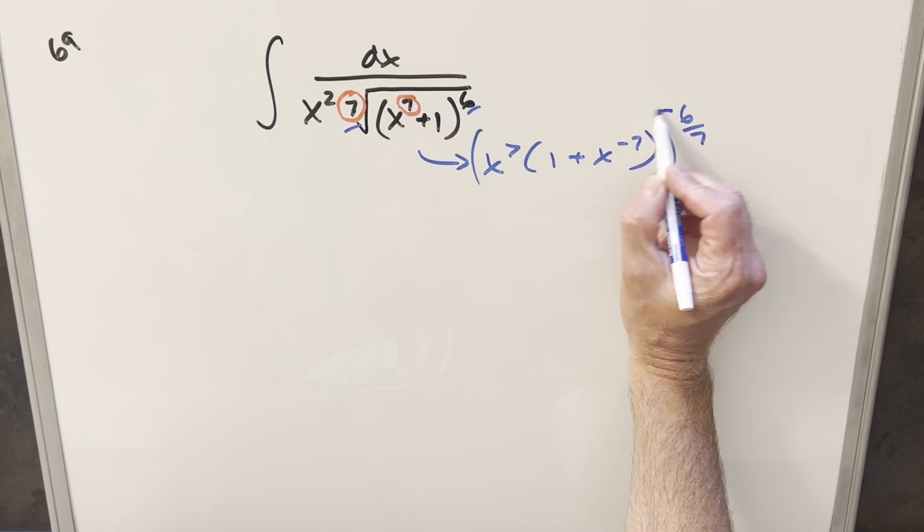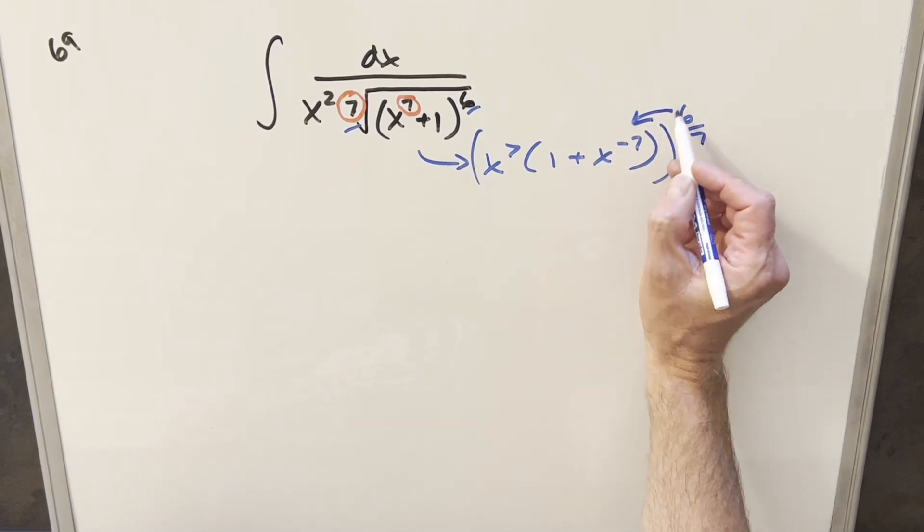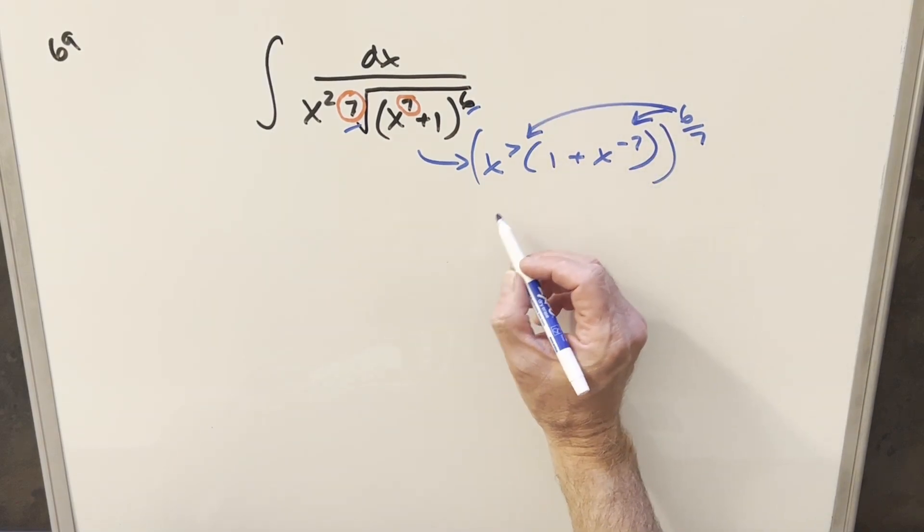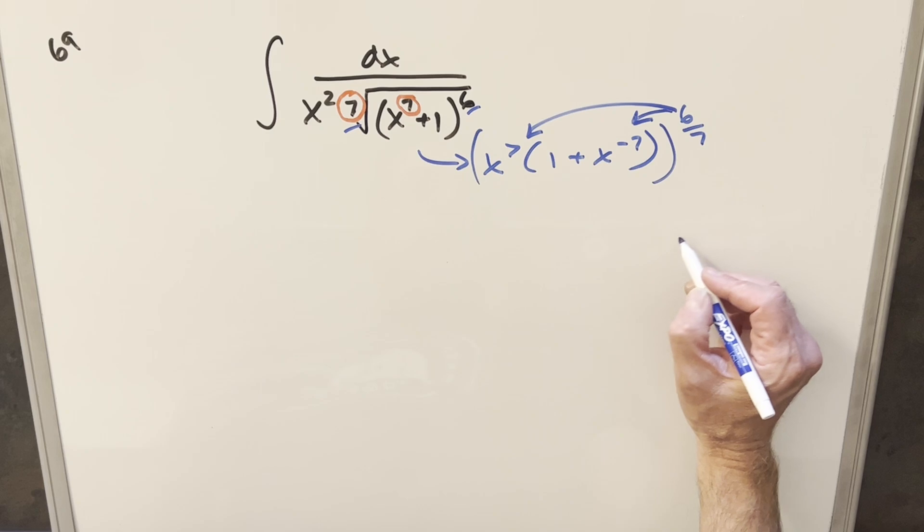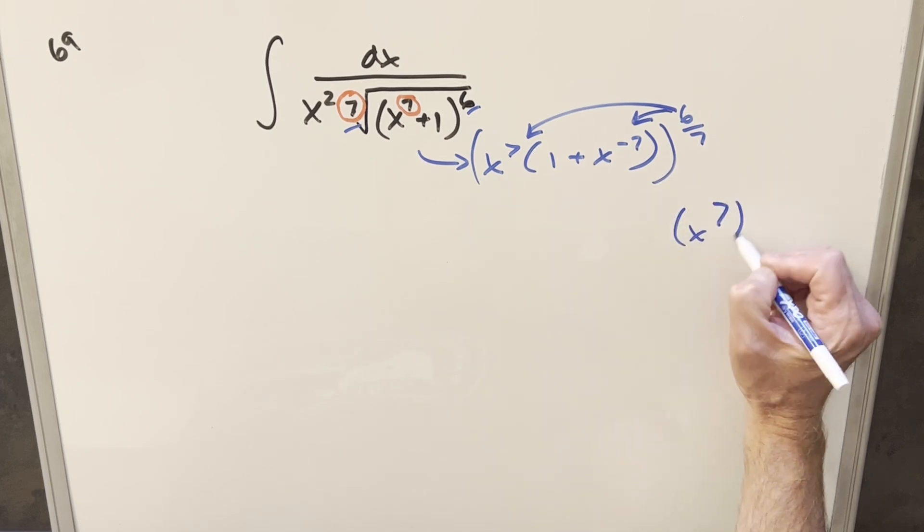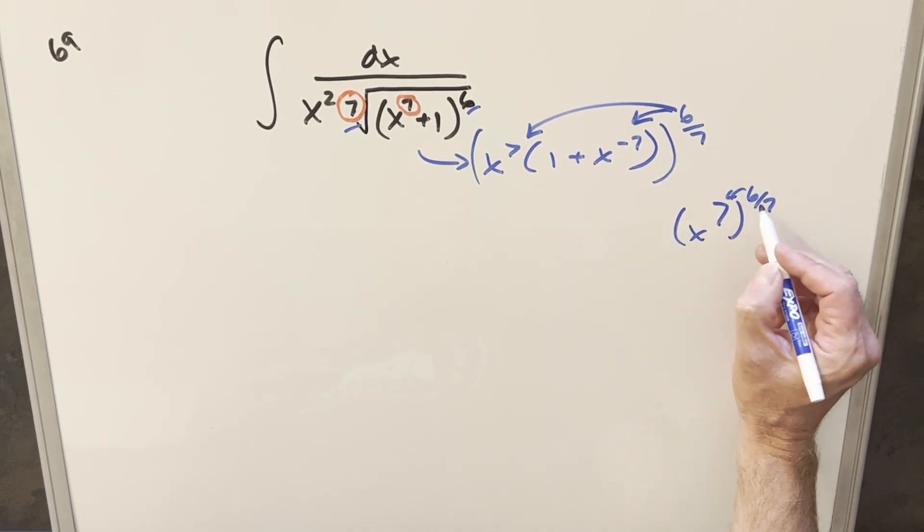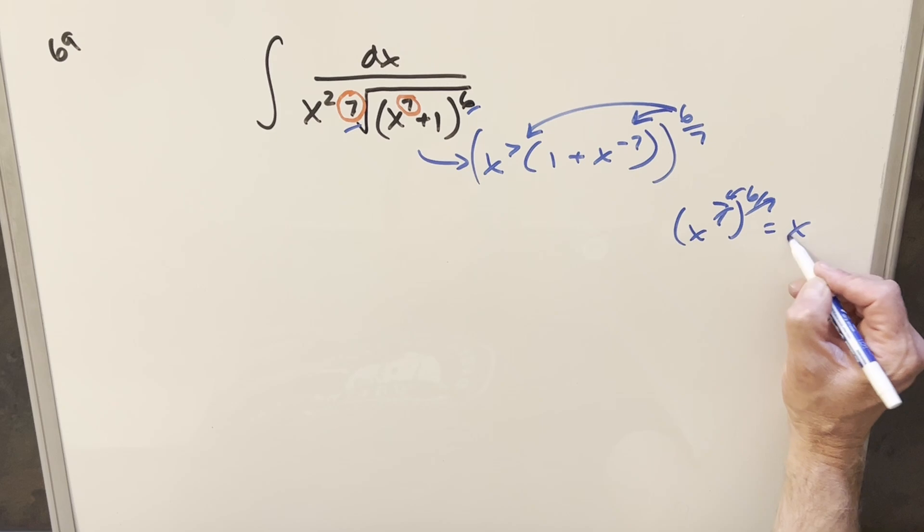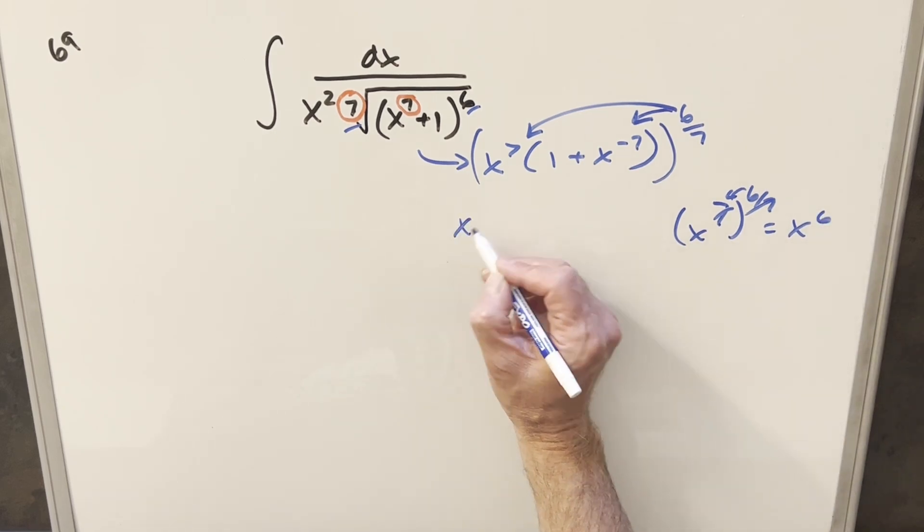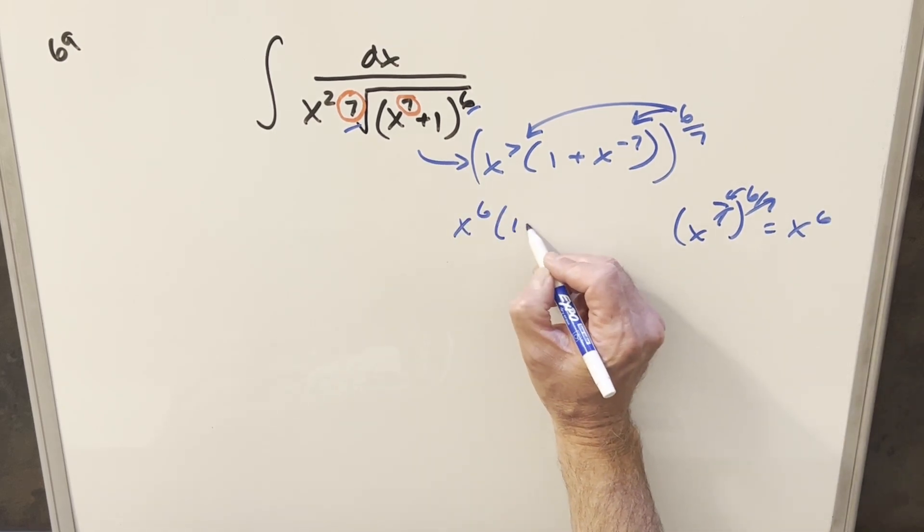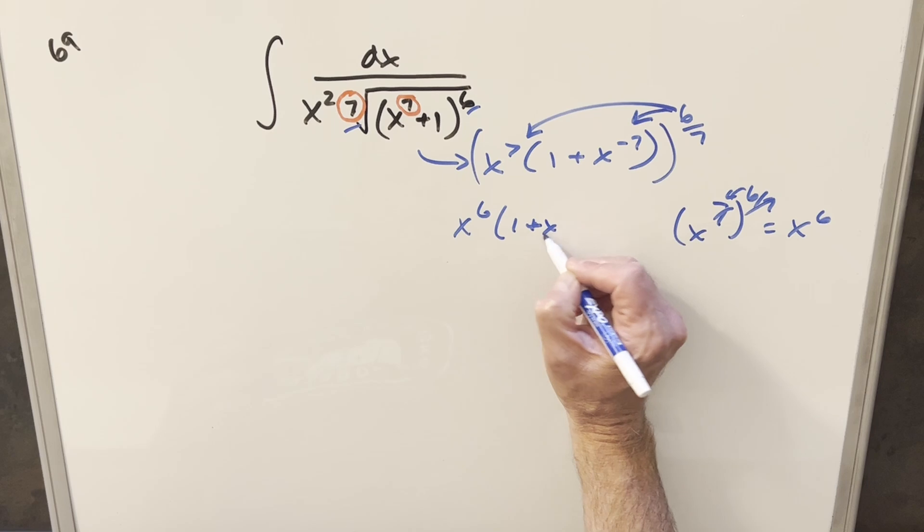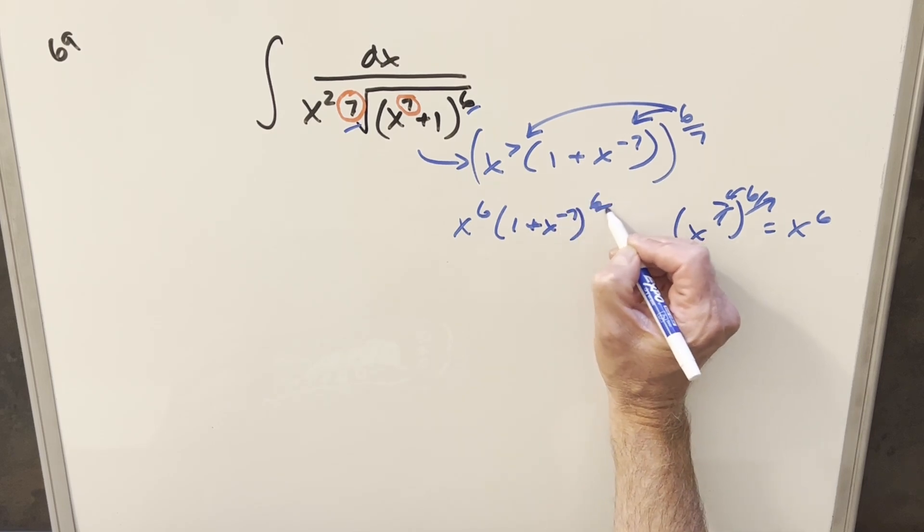And then with exponent properties, we can kind of distribute in the power here and here, but when you distribute it into the x to the 7th, if you have x to the 7th to the 6 over 7th, when you multiply this in, the 7th's cancel and you just get x to the 6th. So what's going to happen here is this becomes x to the 6th, then we have 1 plus x minus 7 to the 6 over 7th.